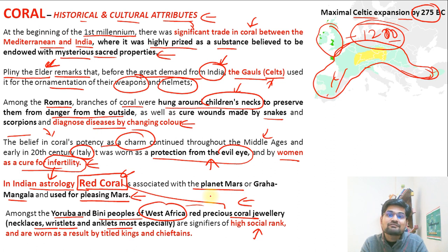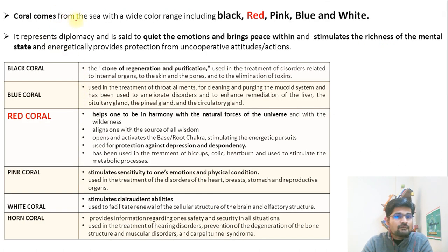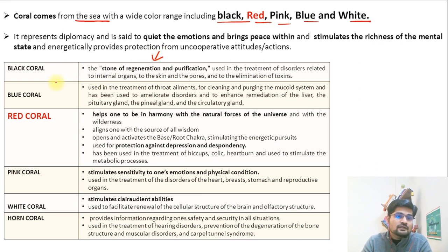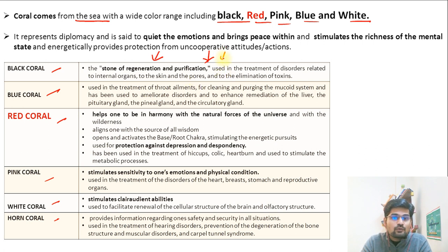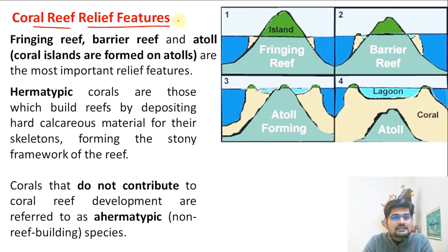Coral comes from the sea and ranges into various colors like black, red, pink, blue, and white. A table has been provided showing each color — black, blue, red, pink, white, and horn — and their particular uses and functions. You can pause the video to read which kind of coral or which color is utilized for what purpose.